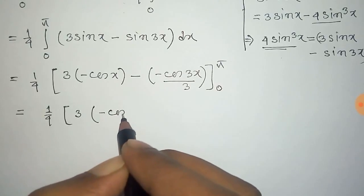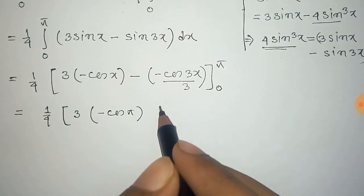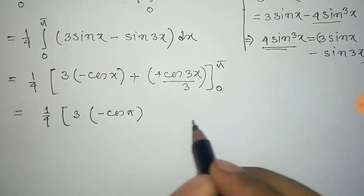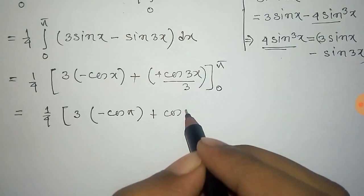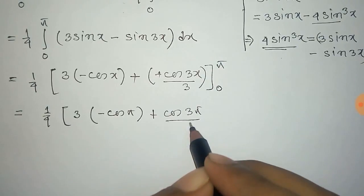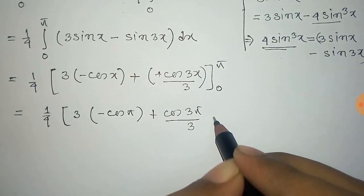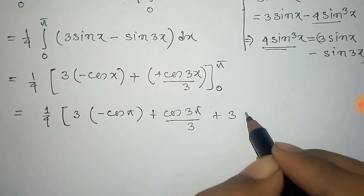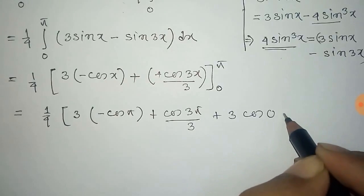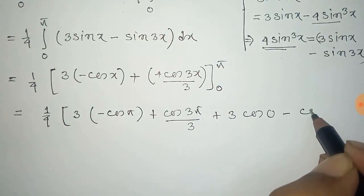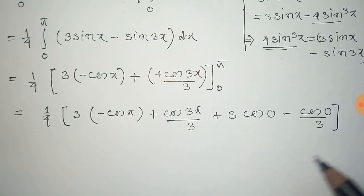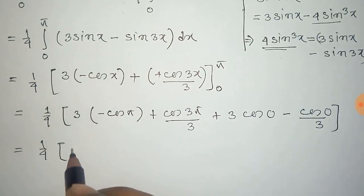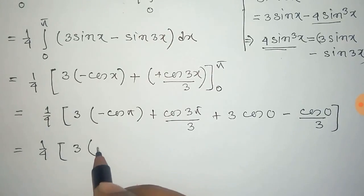Now we apply the limits. Substituting the upper limit pi: we get −cos(π), and the two negatives cancel to give +cos(3π)/3. Then substituting the lower limit zero: we get 3cos(0) − cos(0)/3.